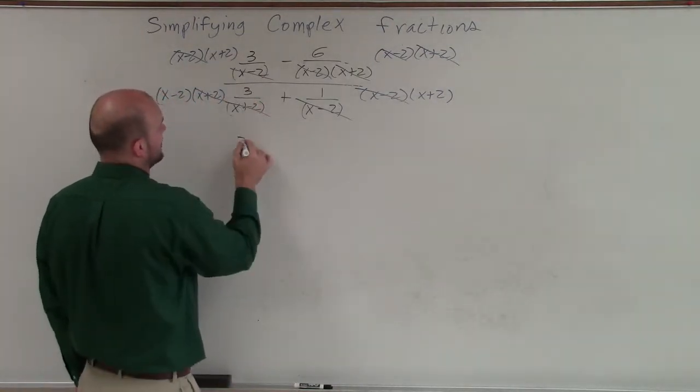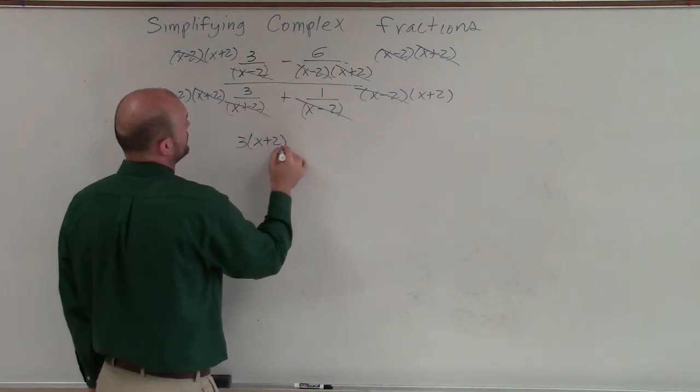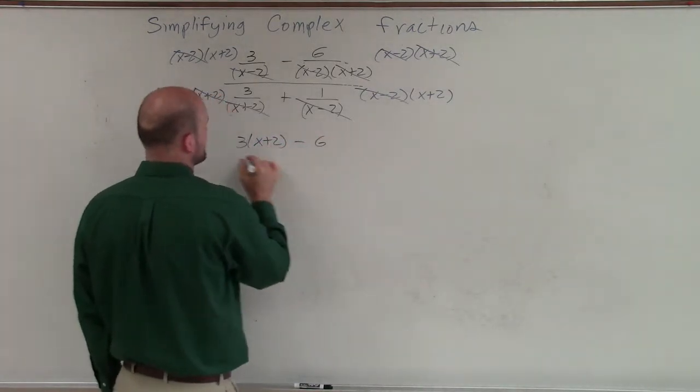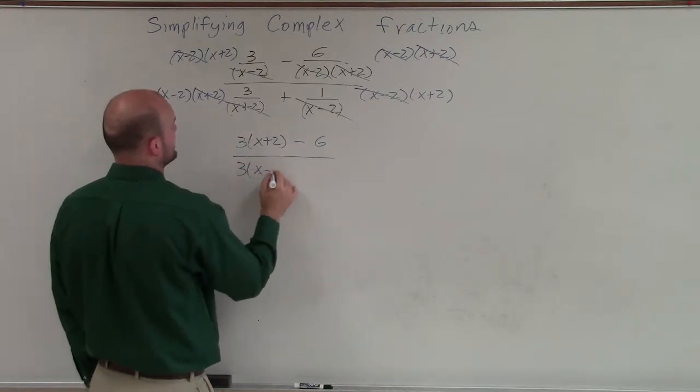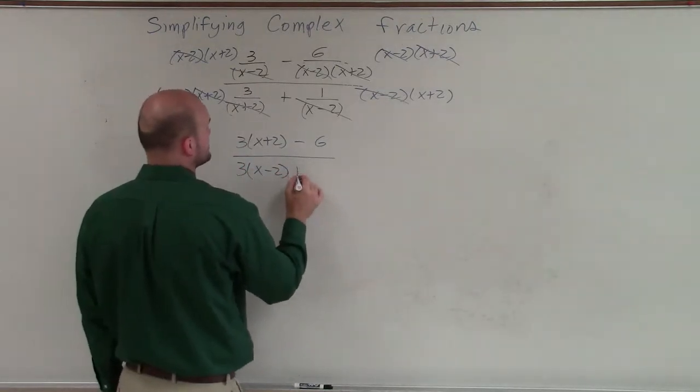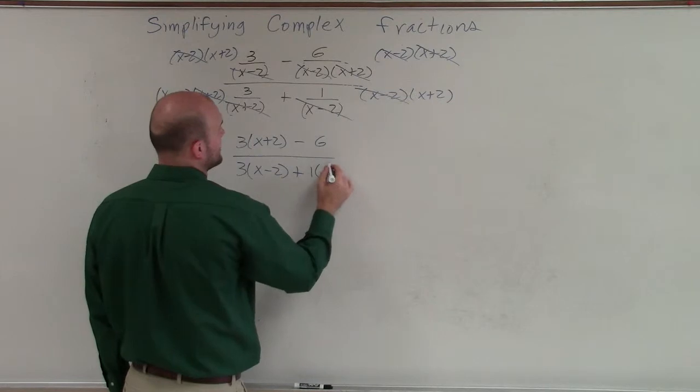So therefore, I'm left with, when I go up here, I'm left with 3 times x plus 2 minus 6 all over 3 times x minus 2 plus 1 times x plus 2.